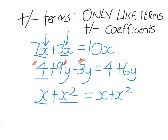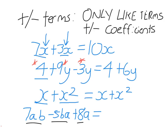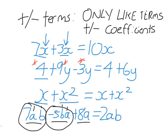Sometimes terms will have more than one letter. You might have the terms 7AB and 5BA, and add 8A. This expression has three terms. 7AB and 5BA are like terms, even though the A's and B's are written in a different order — that doesn't matter. What matters is they both have 1A and 1B. So 7AB minus 5BA is just 2AB. Now 8A is not a like term because it doesn't have a B in it, so we leave it exactly as it is.